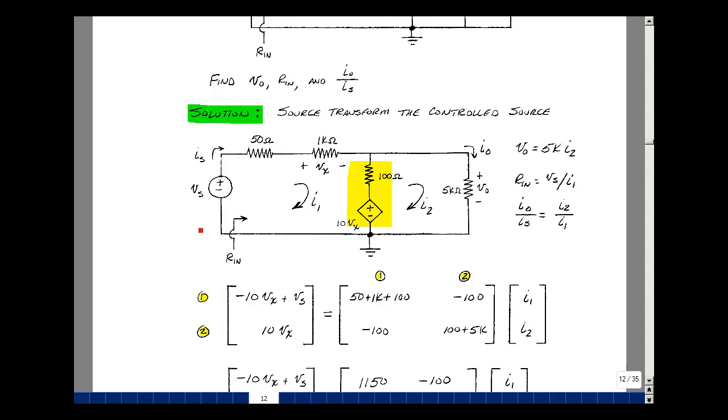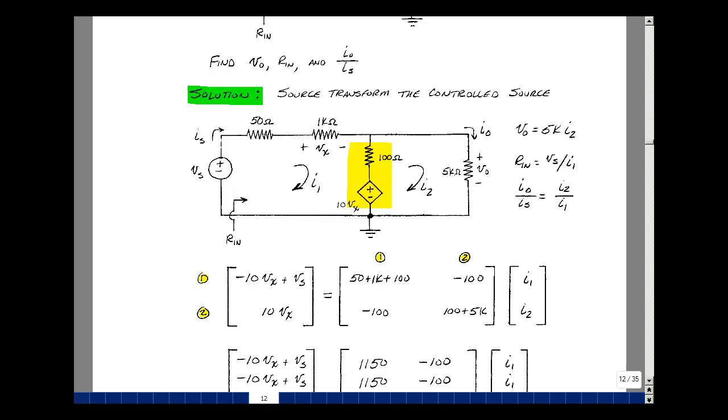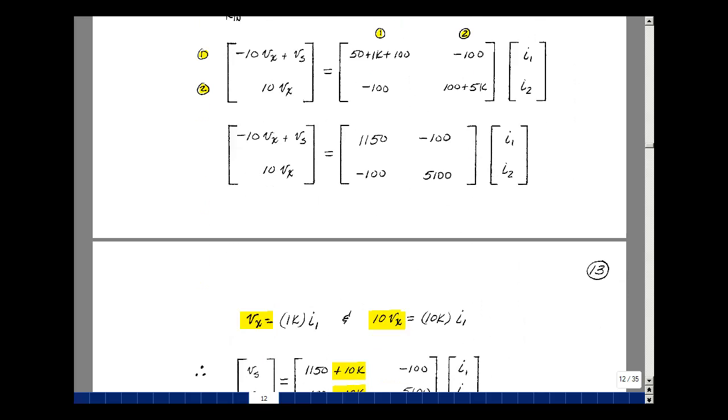Now, my unknowns in this problem are I1 and I2. V sub S, although not specified, is assumed to also be known. But I do have another unknown here, and that's V sub X. But that's the controlling voltage for our control source. And we can express any voltage or any current in terms of mesh currents. The mesh current I1 is flowing through the 1K resistor. That gives me V sub X.